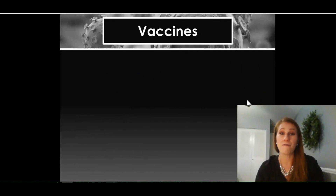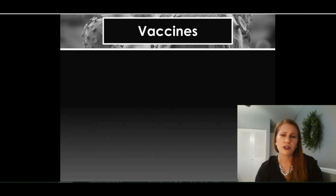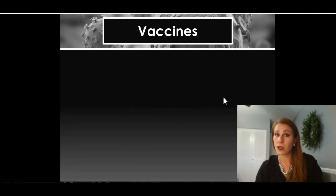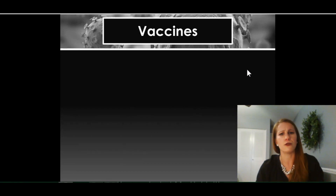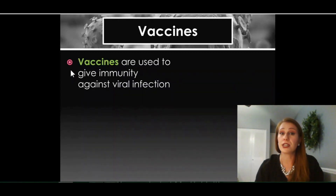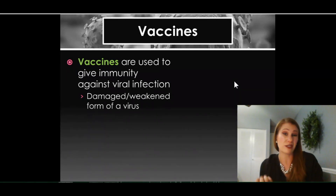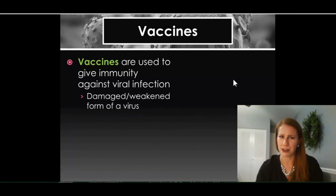Another topic we need to talk about are vaccines. People are trying to come up with a vaccine for COVID-19, with hundreds of research facilities working quickly. But we'll talk about more traditional vaccines, like a flu vaccine. Vaccines are used to give immunity against viral infections, and they usually contain a damaged or weakened form of the virus so your body is able to fight it off without symptoms, or with very minimal symptoms. The goal is to give you protection from a virus without making you go through having the full-on virus.